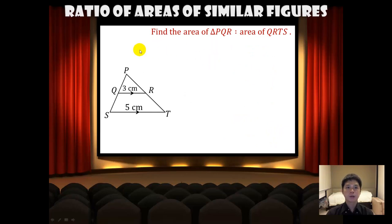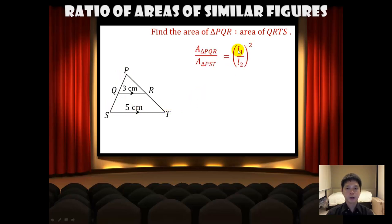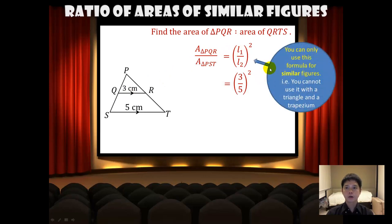Next, let's find the ratio of the area of triangle PQR to the area of QRTS. Note that QRTS is a trapezium. To find this ratio, we first find the ratio of triangle PQR to triangle PST using the formula A1 over A2 equals the square of L1 over L2, substituting the values 3 and 5 on the right-hand side. Recall that this formula can only be used for similar figures. Simplifying, we get 9 over 25.